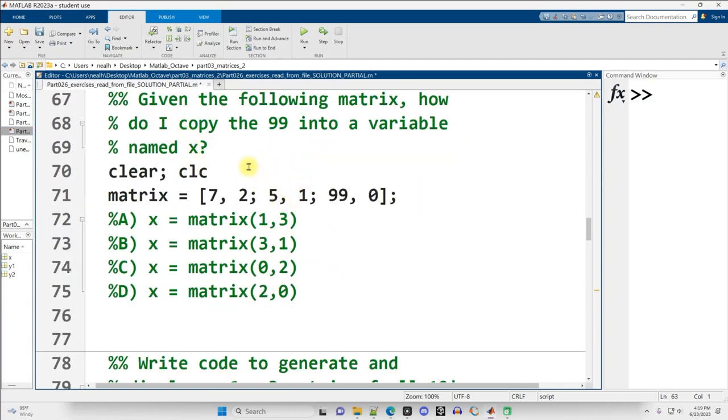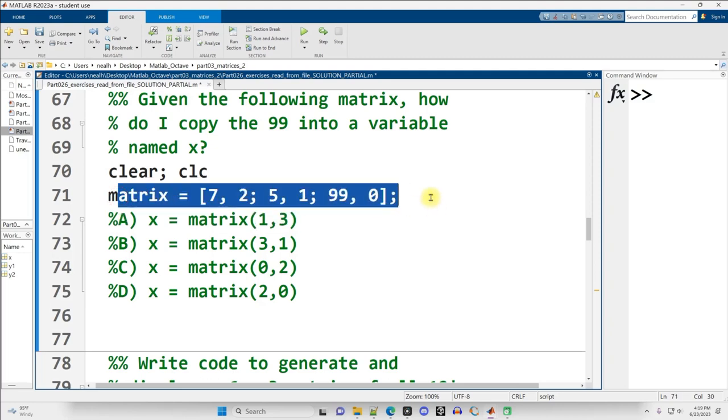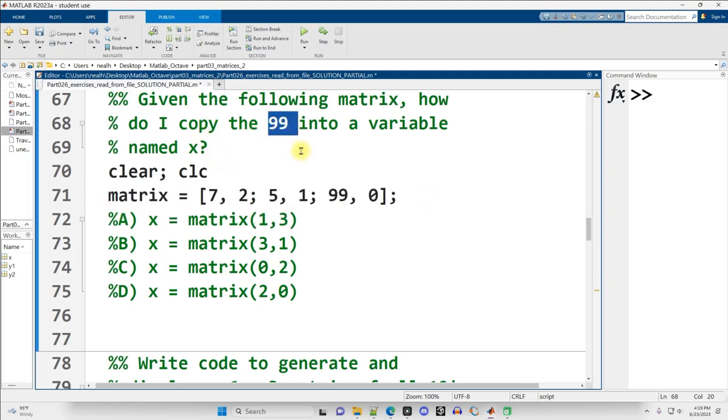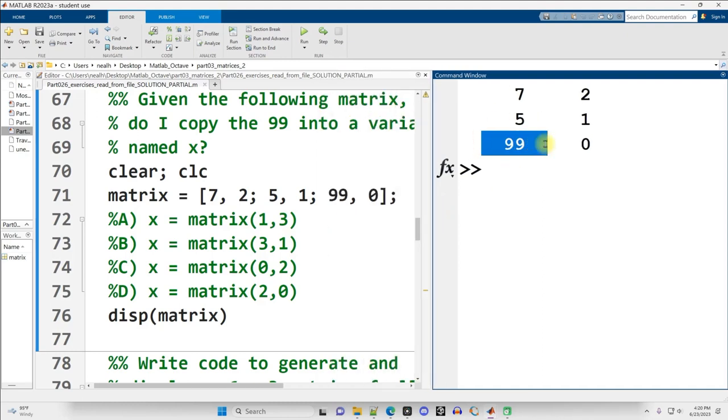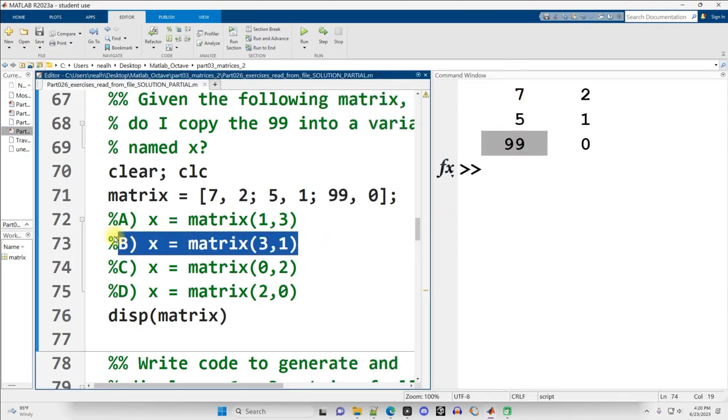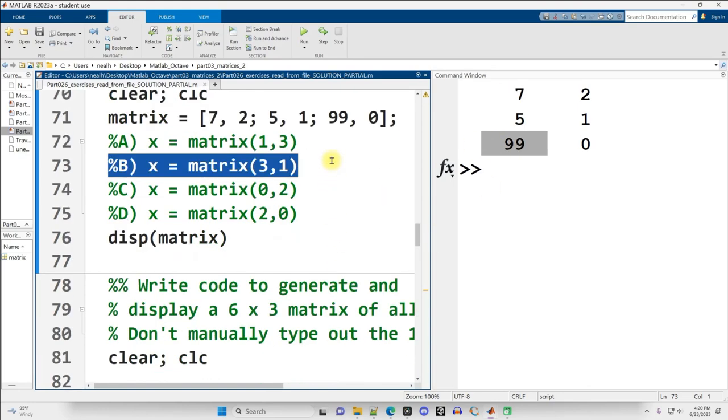Another multiple choice question here. Given the following matrix, this one right here, how do I copy the 99 into a variable? So there's a 99 right there. How do I copy it into some other variable, in this case named x? Which of these does it? Now, it might be helpful to display out the matrix and see what it looks like. Which, of course, you are encouraged to do. All right. So there's our matrix right there. The 99 right here. It's in row 3, column 1. So this is the correct answer right here. This would be the way to do it. Row 3, column 1.